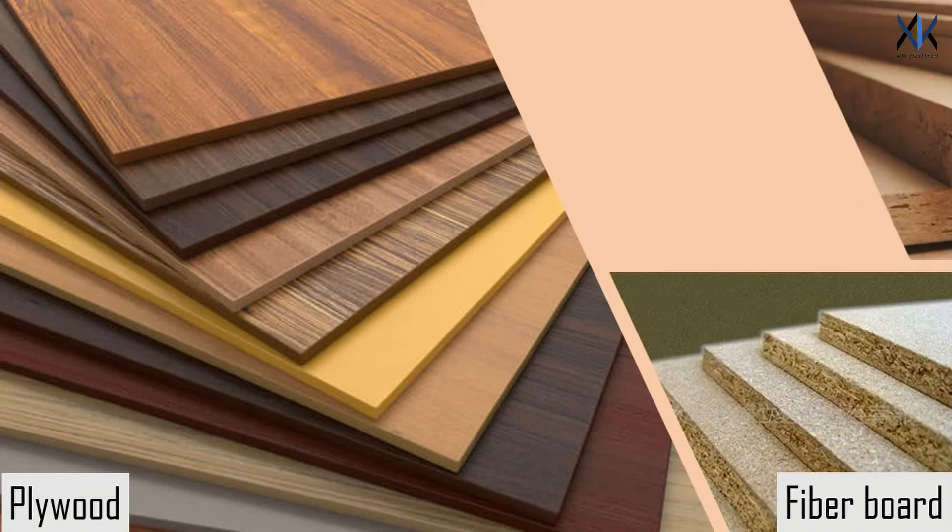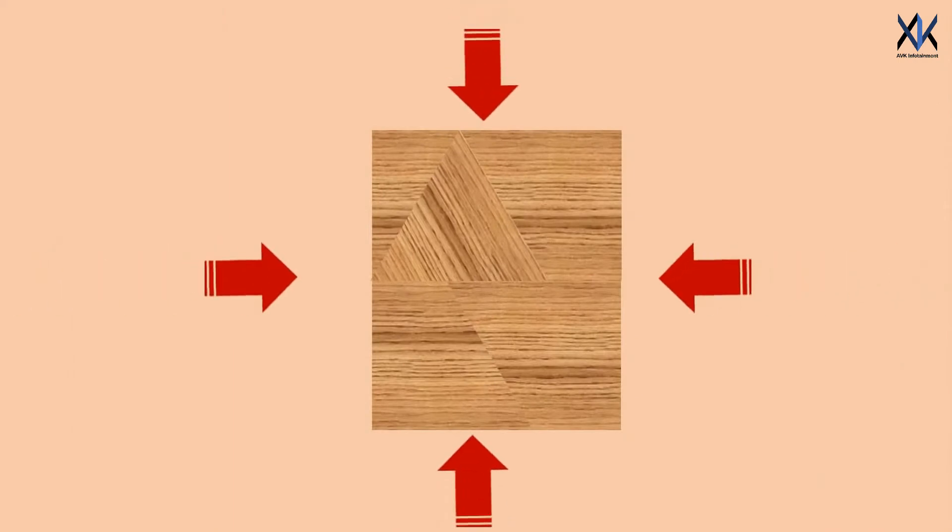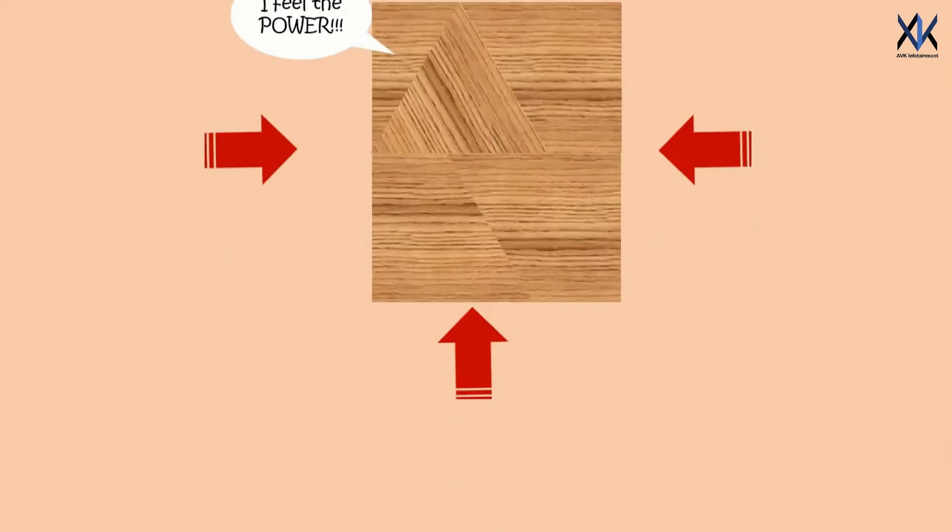This isn't the world's first engineered wood. Plywood, fiberboard, and particle board are all examples of engineered wood. They are made by compressing smaller pieces of wood into a single chunk that's stronger than its composite parts. Of those three, plywood is the strongest.